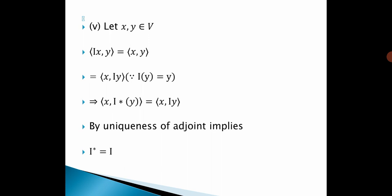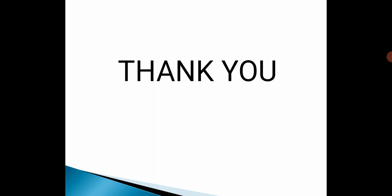Fifth property: Let x, y belong to V. The inner product of I(x), y equals the inner product of x, y, which implies the inner product of x, y, since I(y) = y. That implies the inner product of x, I*(y) equals the inner product of x, y. By the uniqueness of the adjoint, I* = I. Thank you for watching.